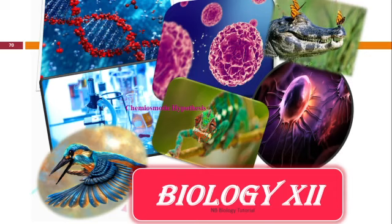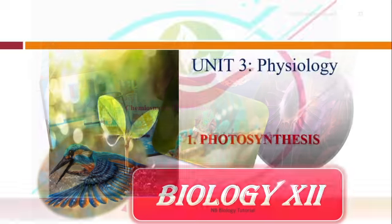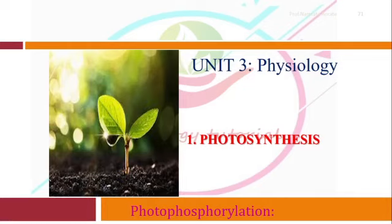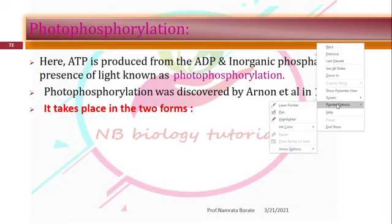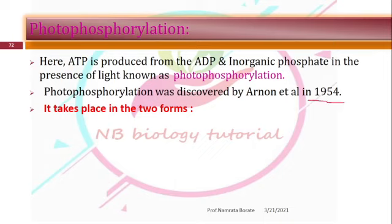Hello friends, we see the next point in the topic of photosynthesis — that point is photophosphorylation. That is the synthesis of ATP molecule from ADP and inorganic phosphate in the presence of light. This is known as photophosphorylation. It was first discovered by Arnon et al. in 1954.